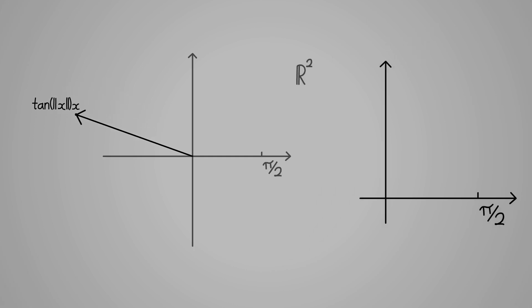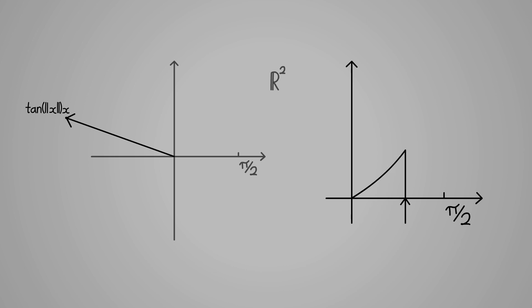Since tan goes to infinity as you approach pi over 2 from below, and each of our points has magnitude up to but not including pi over 2, this stretches our ball over the whole Rn.